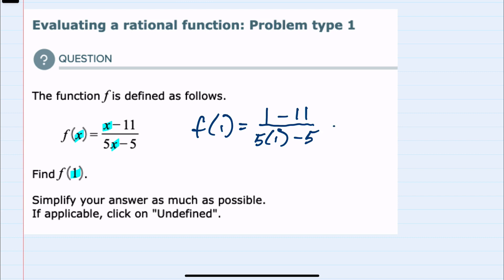And we can simplify the numerator here. 1 minus 11 is negative 10. In the denominator, I would do multiplication first, which would give me 5 minus 5.